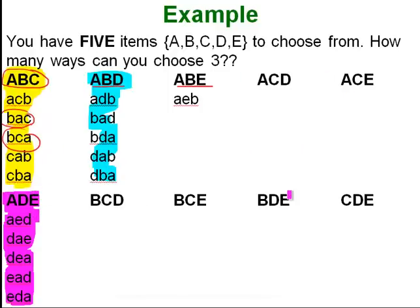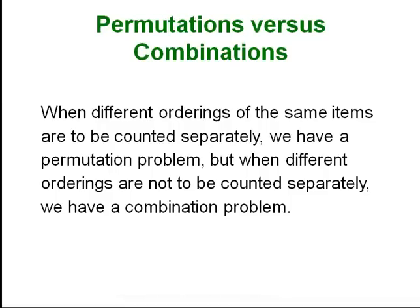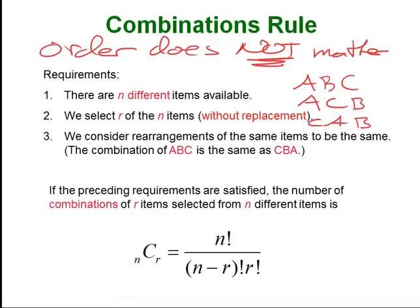Every single one of those groups of six gets reduced down to just one thing, and instead of 60 we are down to 10. So with this combination, when order doesn't matter, instead of 60 total things we have 10 total things. Let's look at the formula to see how that works.